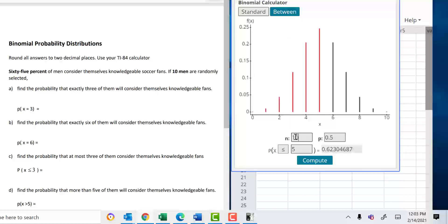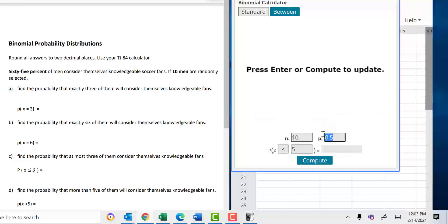First of all, you have to enter the number of trials, which in this problem it says 10. So, we're just going to put a 10. And the probability of success, it says 65% of men consider themselves knowledgeable soccer fans if 10 men are randomly selected. So, we're going to put 0.65 there. That's all and now we'll start answering the questions.